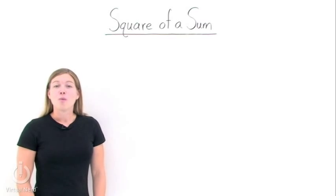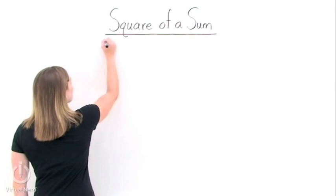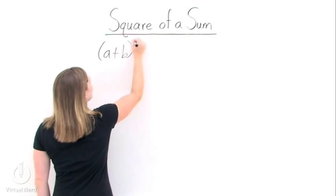What is the square of a sum? Well, the square of a sum is a formula that we use to help us find the square of a binomial.